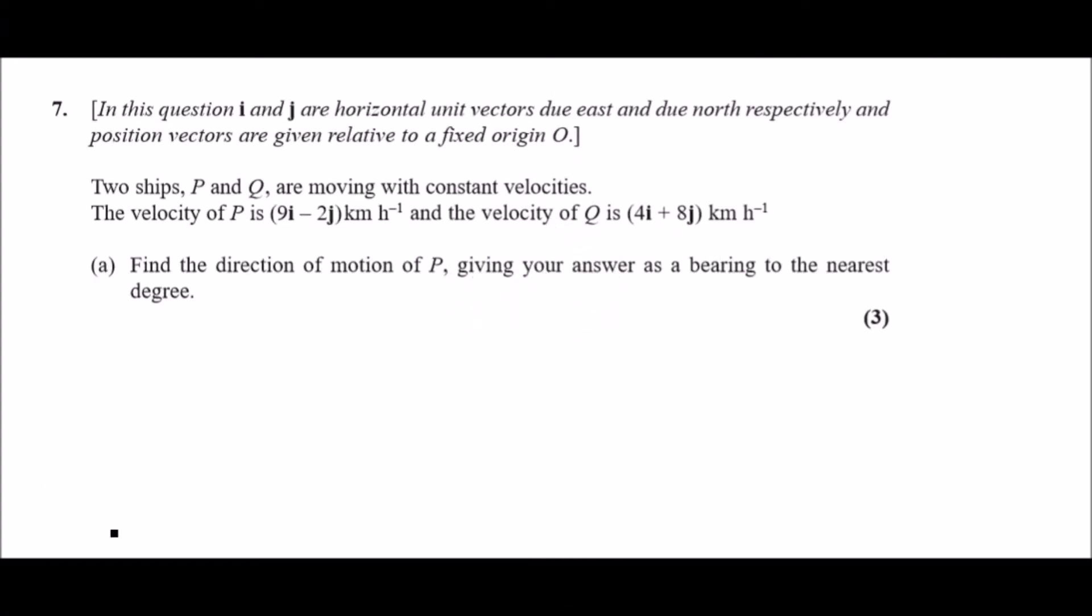Two ships P and Q are moving with constant velocities. The velocity of P is 9i minus 2j, and the velocity of Q is 4i plus 8j. They're both measured in kilometers per hour, so make sure we remember that for a later question.